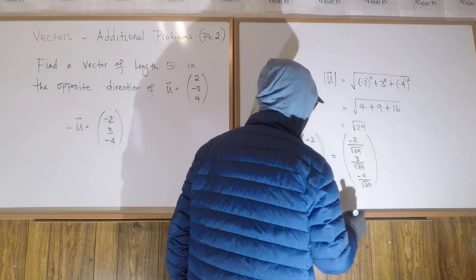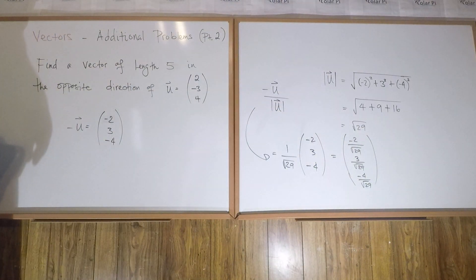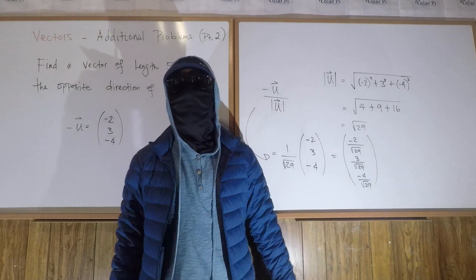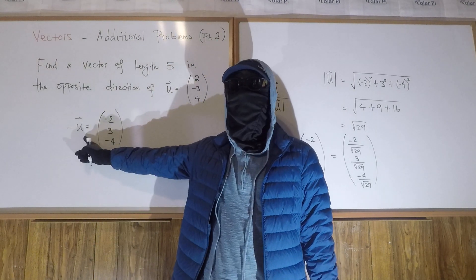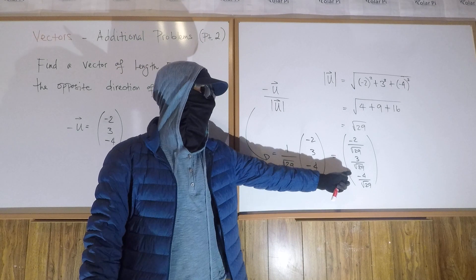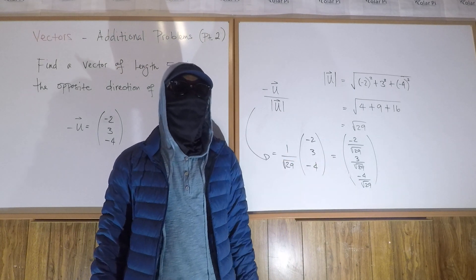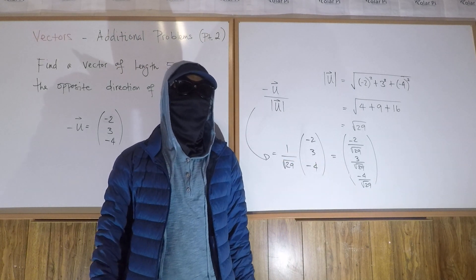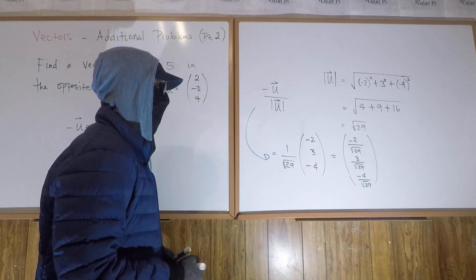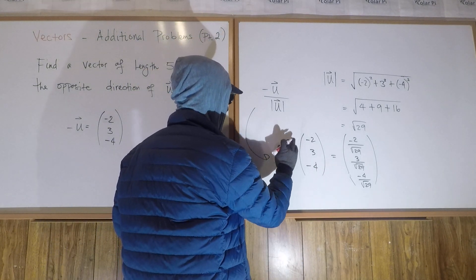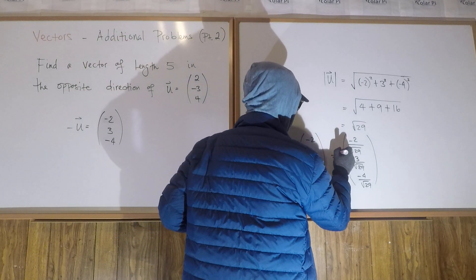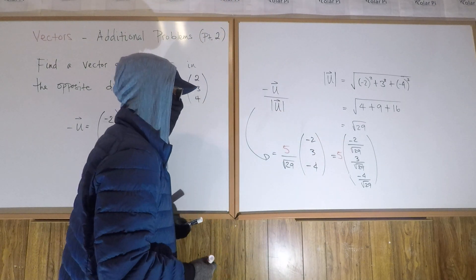Right, so this is it. This points in the same direction as negative u and therefore opposite to u, but this vector is of length 1. So how do we make it of length 5? We multiply this vector by 5 — just put a 5 right here, scalar multiplication.